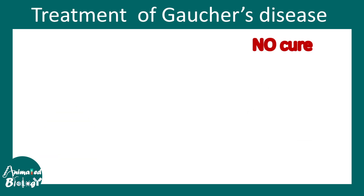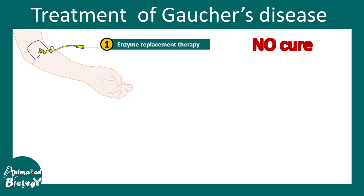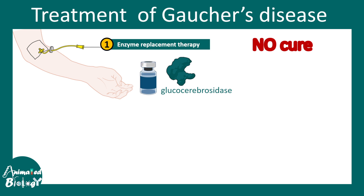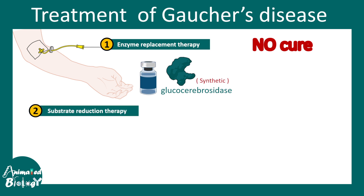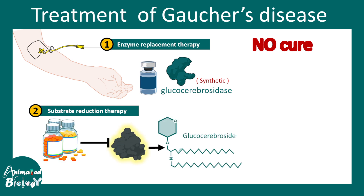There is no cure for this disease, but enzyme replacement therapy — where artificial glucocerebrosidase is provided — can improve the situation. Substrate reduction therapy, using medications or drugs that reduce the production of glucocerebroside, can also be useful.